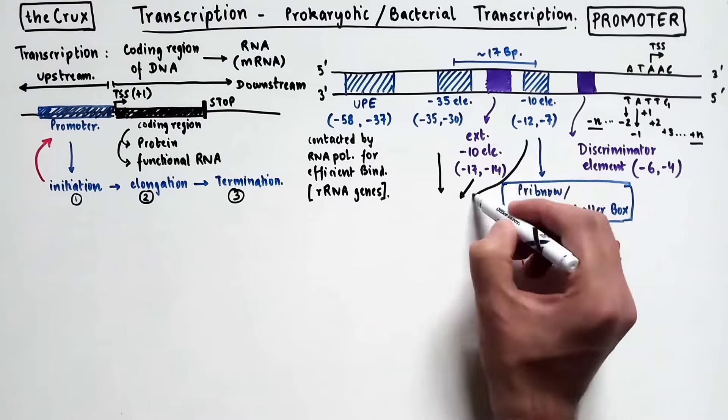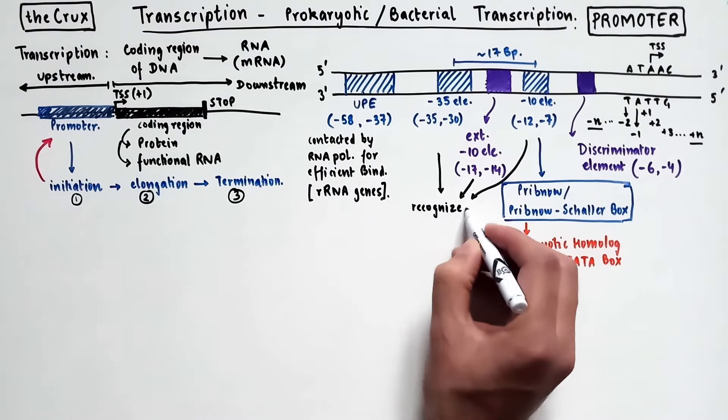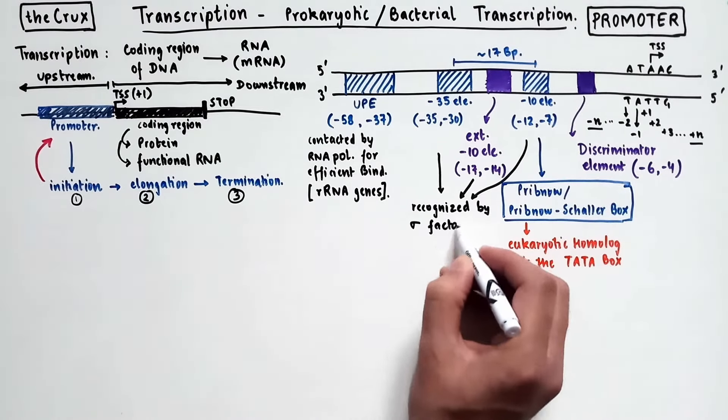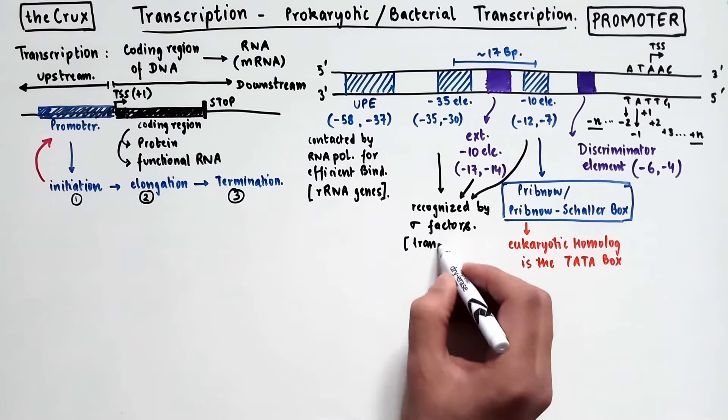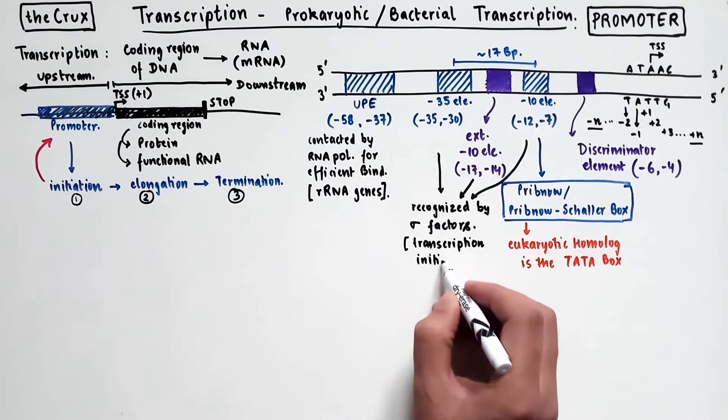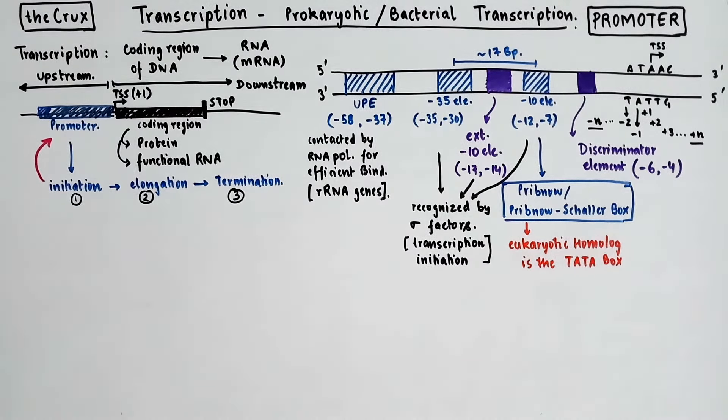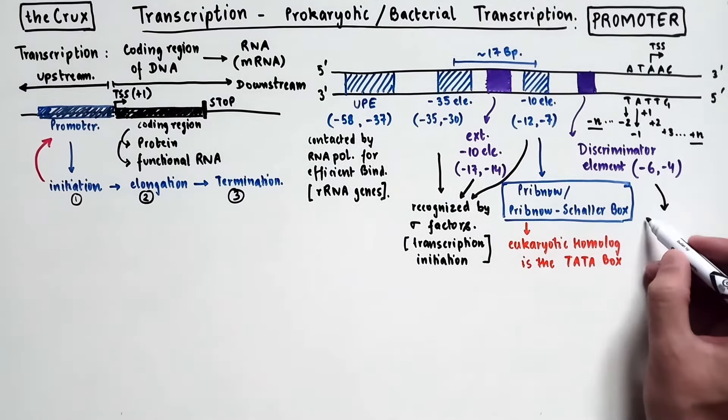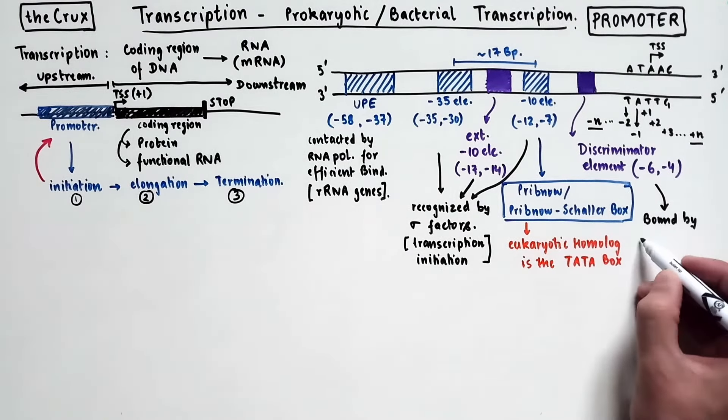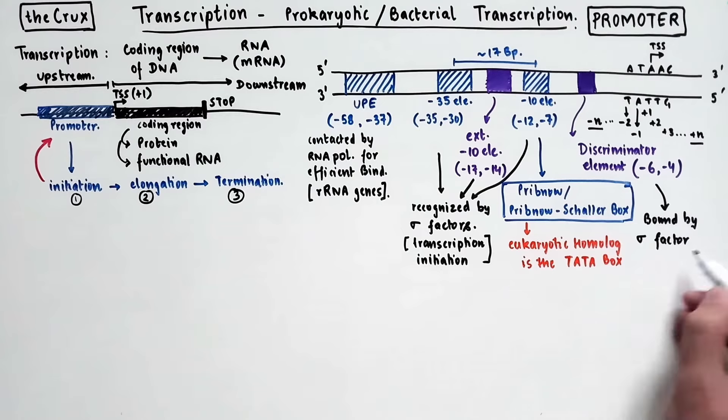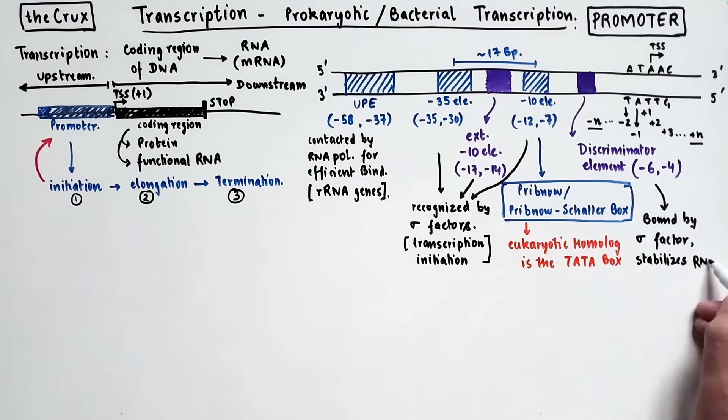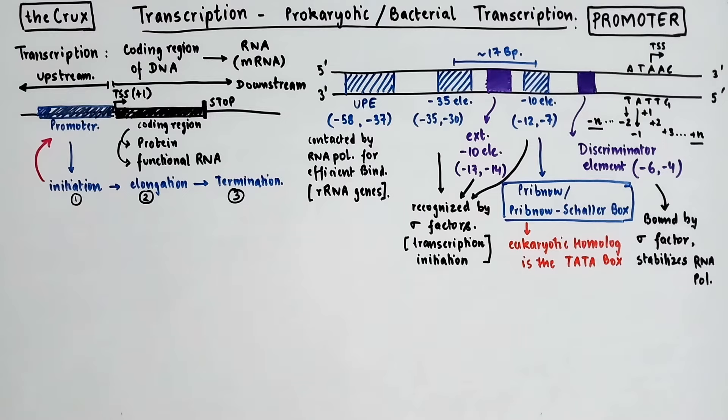Then the negative 35 element, extended negative 10, and the negative 10 elements are contacted by the sigma factors, which are responsible for the transcription initiation process. Finally, the discriminator element is also bound by the sigma factors. And because sigma factors are bound to the RNA polymerase, the discriminator element helps stabilize the polymerase.